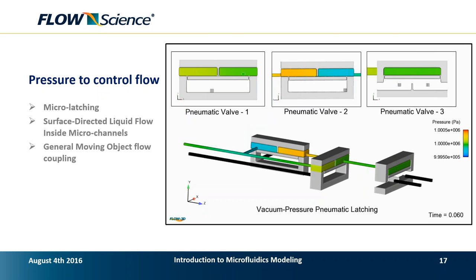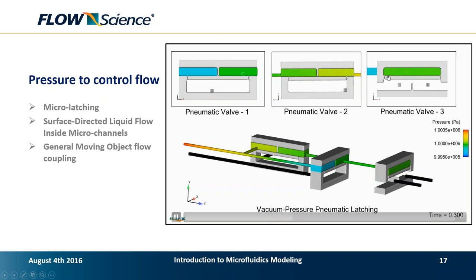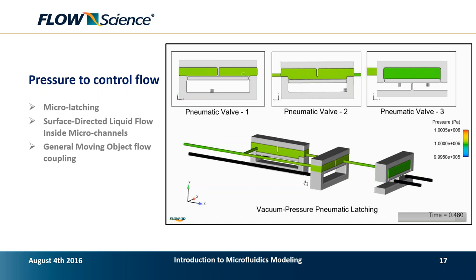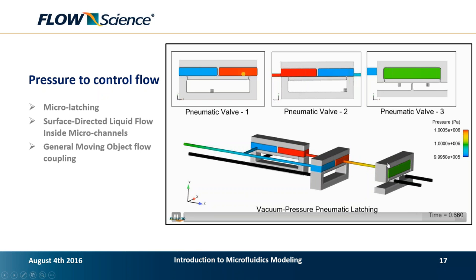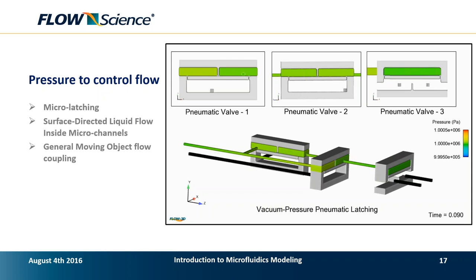A more complicated example also uses pressure but couples it with the general moving objects model, allowing valves to go up and down depending on the pressure field. Black pipes serve as pressure controls — we can apply pressures at different locations and control where the fluid is being channeled. By coupling pressure controls and moving objects, you are able to model systems of pneumatic valves very effectively.